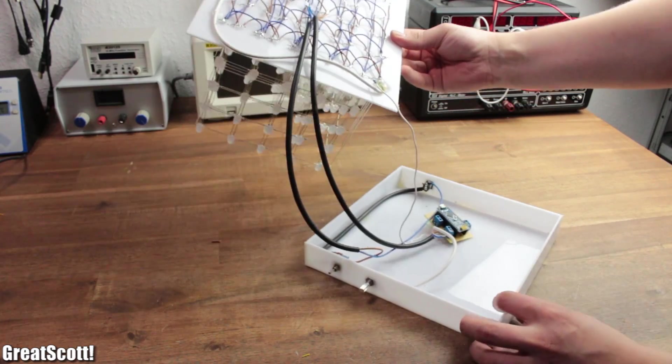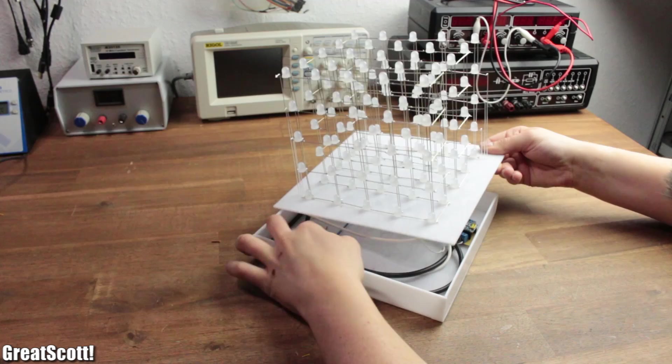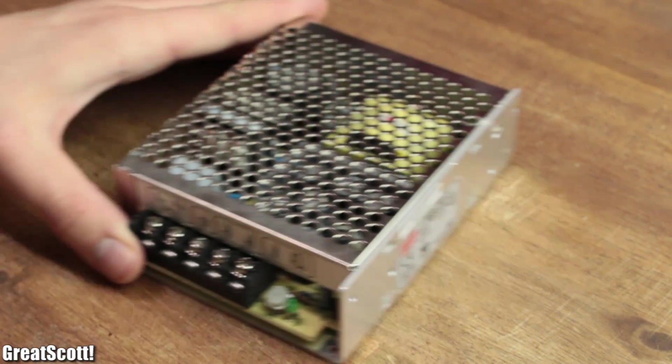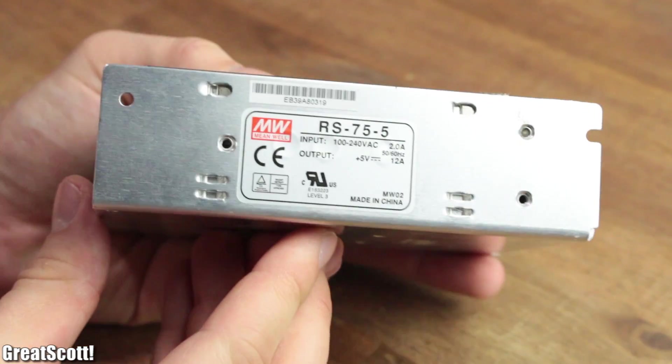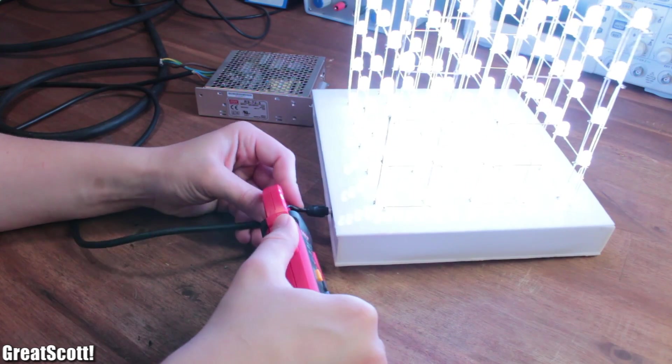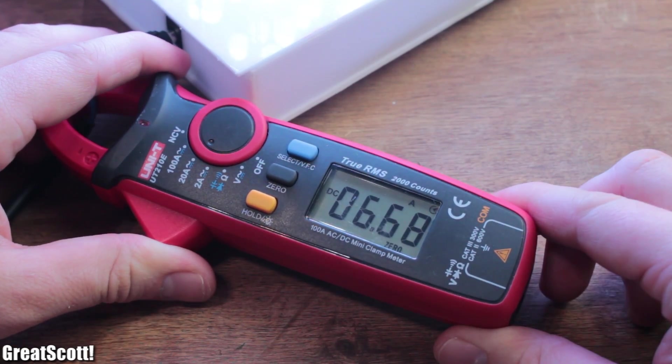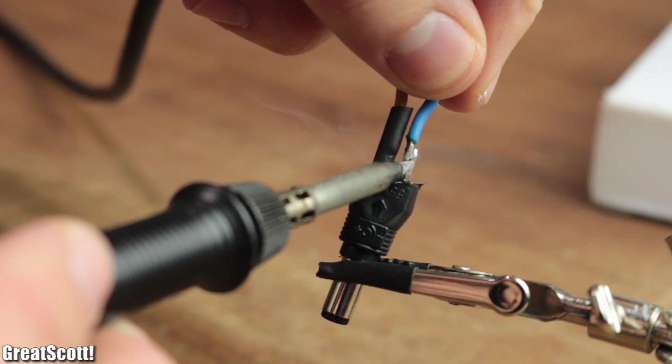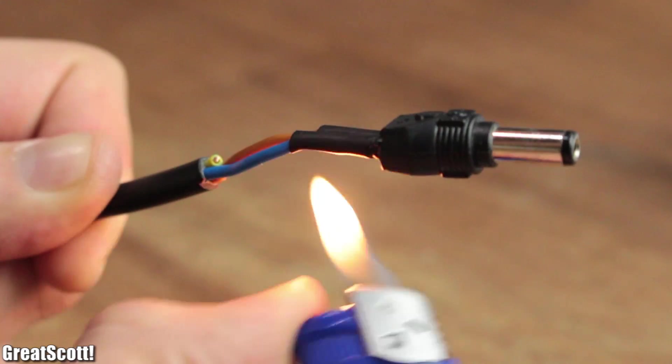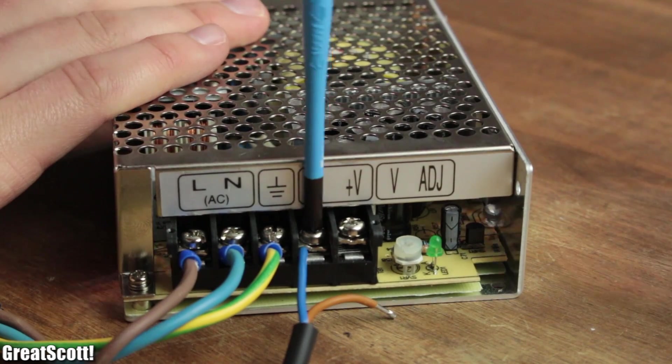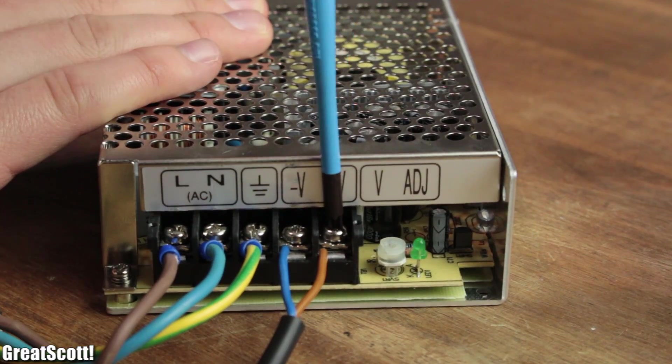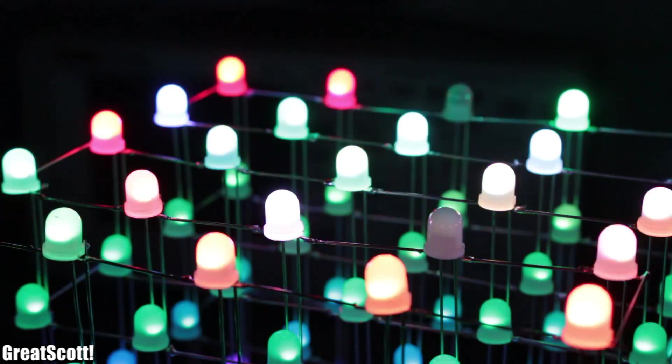And the project is done! Well, almost. For supplying power I went with this five volt 12 amp power supply because the cube can draw up to 6.7 amps in the worst case. I just soldered a fitting barrel connector to 1.5 square millimeter wire, plugged it in and secured the wire with the help of the screw terminal.